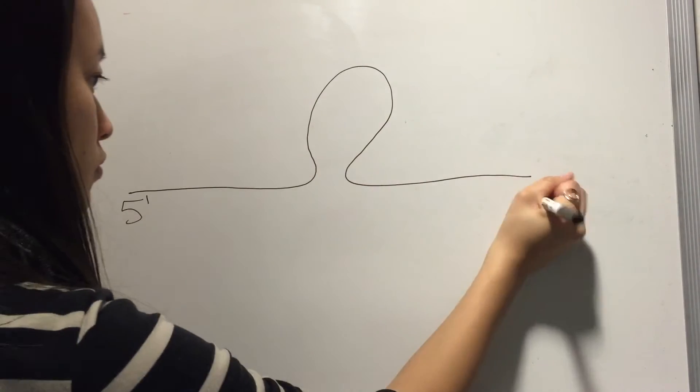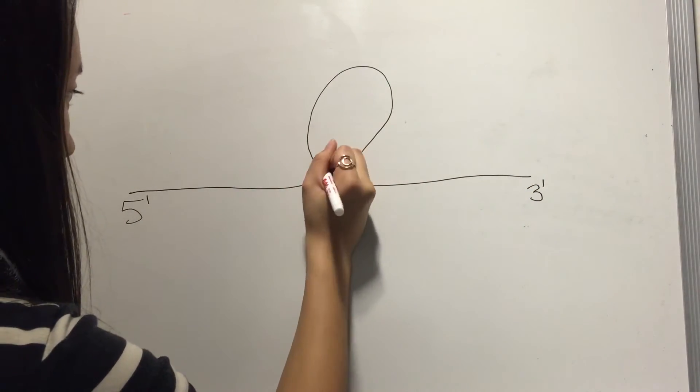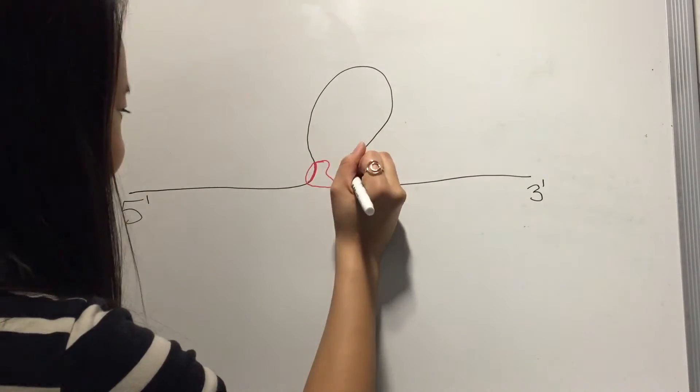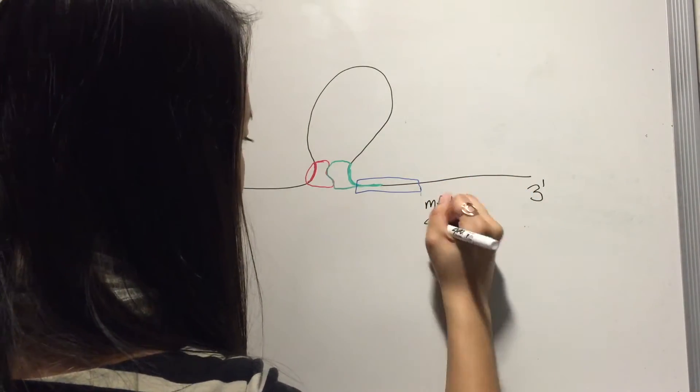The DNA between an enhancer and the promoter loops out so the activator proteins bound to the enhancer can directly interact with the basal transcription machinery and the RNA polymerase at the core promoter. This increases the rate of mRNA transcription.